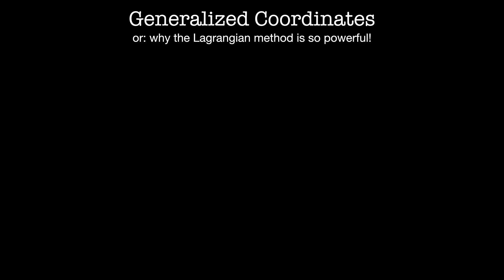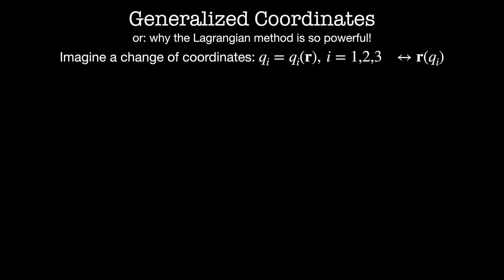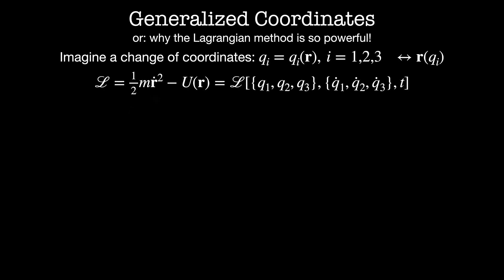The concept of generalized coordinates is the reason the Lagrangian method is so much more powerful. Imagine a change in coordinates — this could be tied to the geometry of the system, like a transformation from Euclidean to cylindrical coordinates, or something more easily measured, like the distance a block has slid down an inclined plane. We call our new coordinates q_i, which are functions of our original Cartesian coordinates r, where the index i runs over 1, 2, 3 corresponding to the three components x, y, z. In the original coordinates, the Lagrangian is one half m r dot squared minus the potential energy, and this equals the new Lagrangian in terms of q1, q2, q3, and their derivatives.